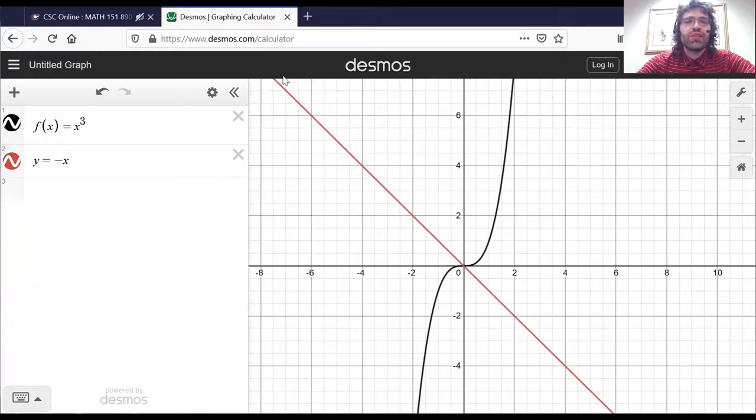Which means if you think of this line y equals negative x as being a mirror, and you take this part of the curve and you reflect it over the mirror, you get this part of the curve, and vice versa. If you take this part of the curve, reflect it over this mirror, you get this part of the curve.